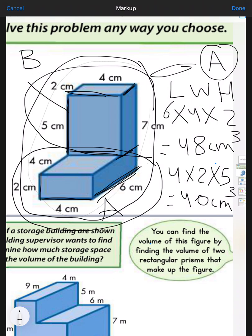So the total volume equals 48 plus 40, which equals 88 cm³. We have to be careful when we cut the combined prism into two prisms and find the volume of each one. Then we add to find the total volume.